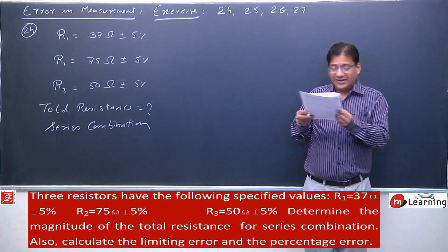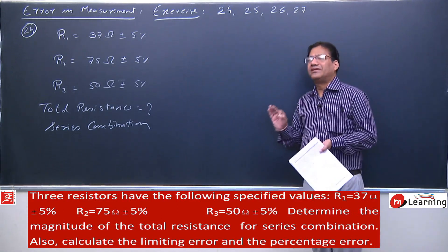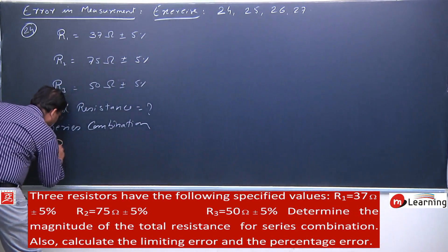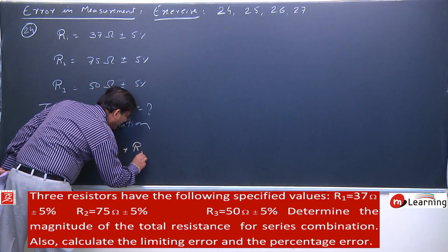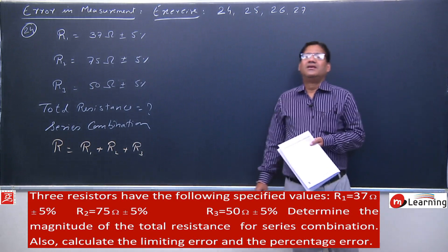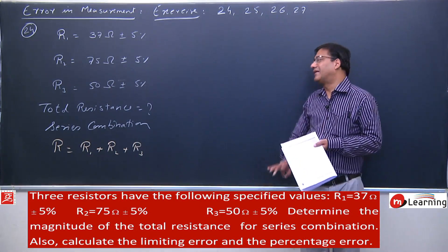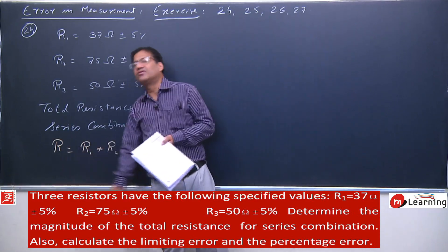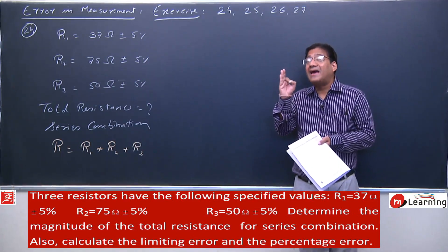Also calculate limiting error and the percentage error. First, note that in series combination, resistances are simply added. When the quantities are additive, recall that absolute errors are added. When R1, R2, R3 are simply added to obtain overall resistance, the absolute errors also add.